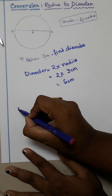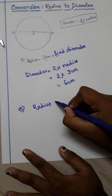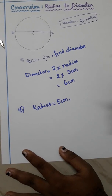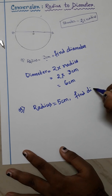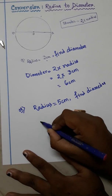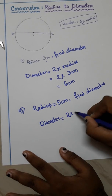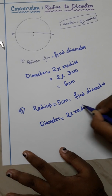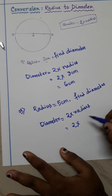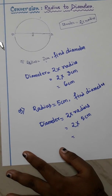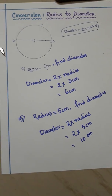Let me do another one. If in the question radius is given as 5 centimeters and you have to find the diameter, you will write: diameter equals 2 into radius. The value of the radius is 5 centimeters, so 2 into 5 equals 10 centimeters. So this becomes our answer.